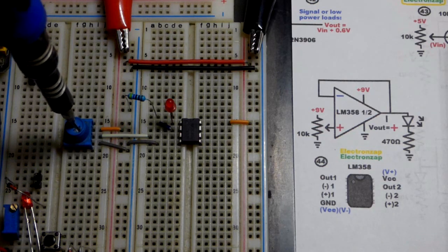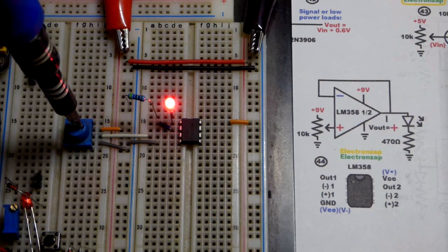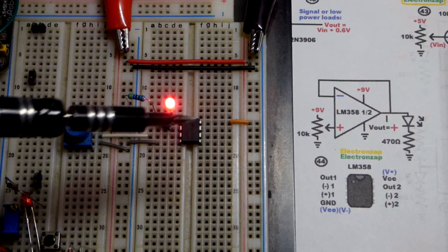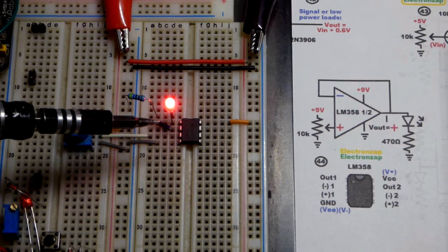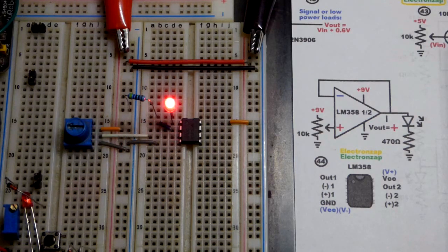You can see we got a little wiggle room for the LED voltage. But ultimately the voltage we set at the non-inverting input will be the voltage at the output thanks to the direct feedback of the output to the inverting input.